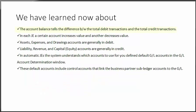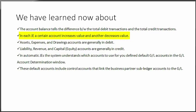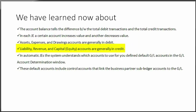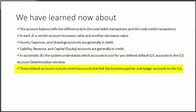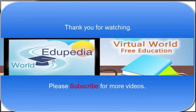In summary, account balances reflect the difference between total debit transactions and total credit transactions. In each general entry, a certain account increases in value and another decreases. Assets, expenses, and drawing accounts are generally debited. Liability, revenue, and capital equity accounts are generally credited. In automatic journal entries, the system determines which accounts to use from the default general ledger accounts defined in the GL account determination window. These default accounts include control accounts that link the business partner sub-ledger accounts to the GL. Thank you.